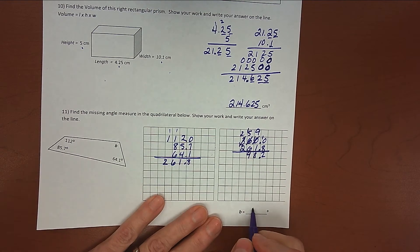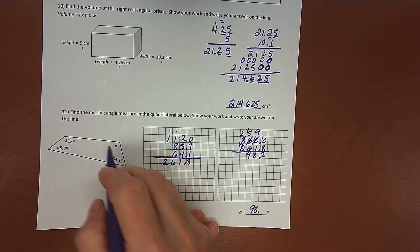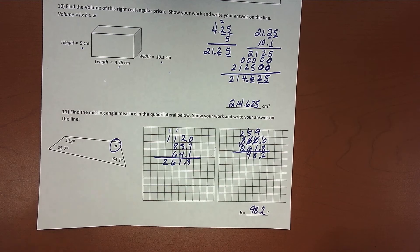So the answer is that my angle, the missing angle right here, measures 98.2 degrees. All right. Let's tune in to the next video for page 4.